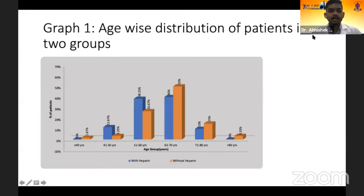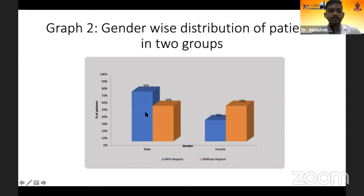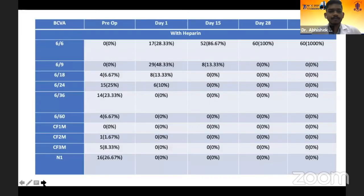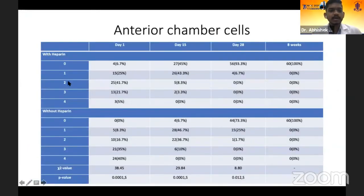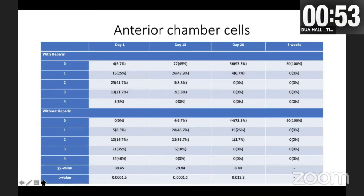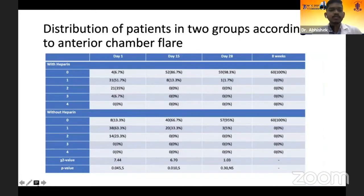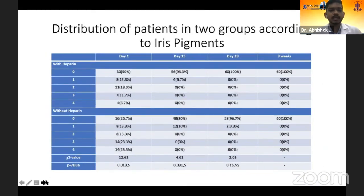In our study, the maximum patients belonged to the age group of 61 to 70 years. In the group where heparin was used, males were 70% and females 30%; however, in patients where heparin was not used, there was equal gender distribution. For anterior chamber cells, comparing patients who received heparin versus those who did not, on day 1 and day 15 there were statistically significant values indicating patients who received heparin had significantly less reaction. However, on late post-operative days — day 28 and 8 weeks — it was not significant. Similar trends were seen in anterior chamber flare and iris pigment dispersion, indicating early post-operative reaction was considerably less when heparin was used.